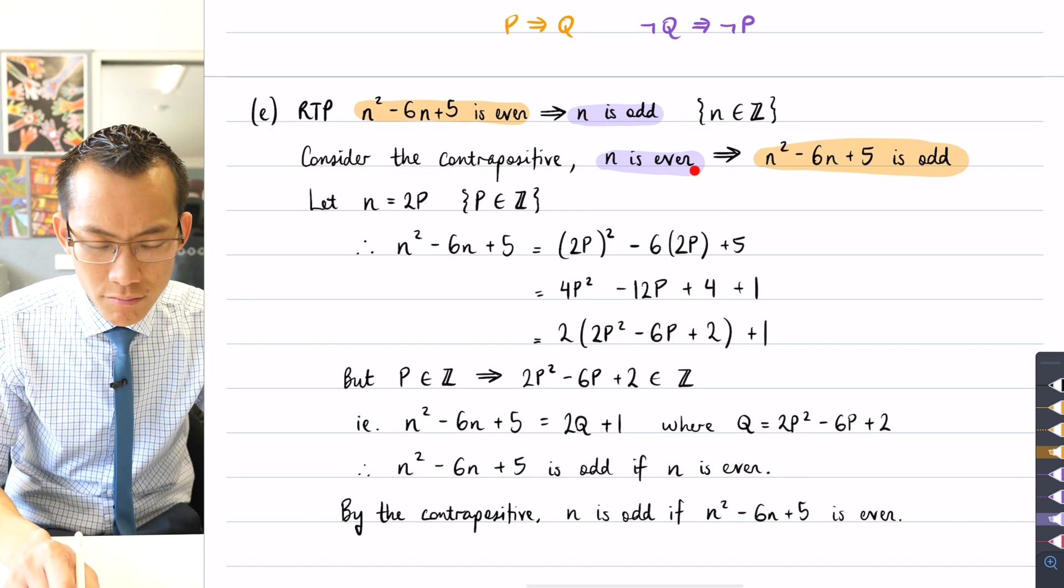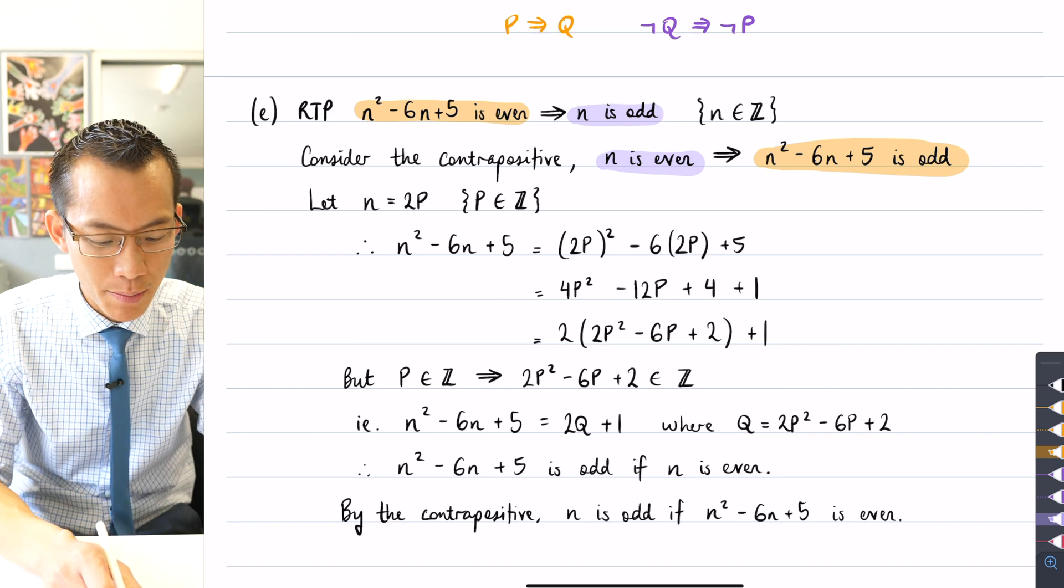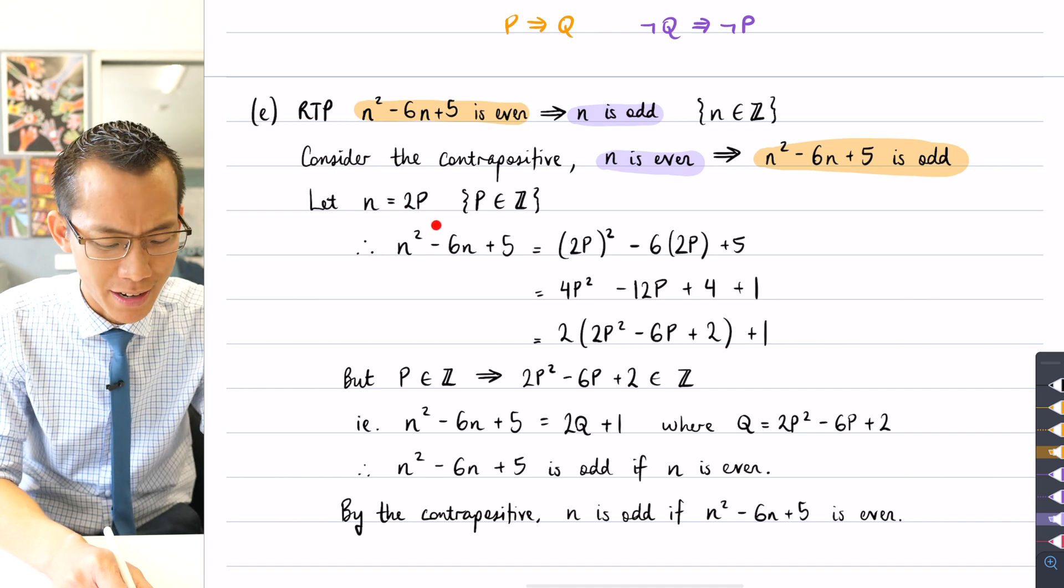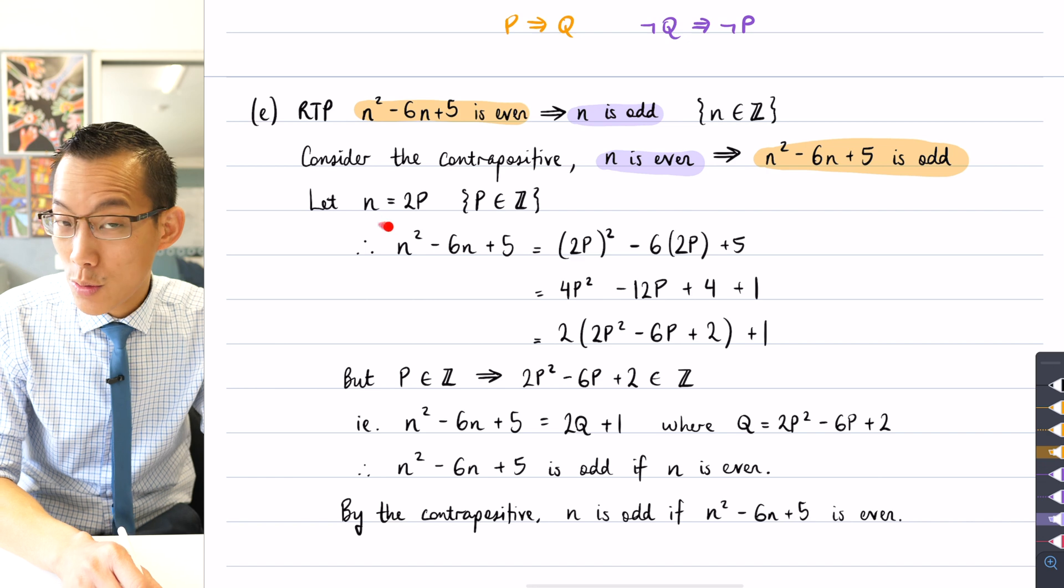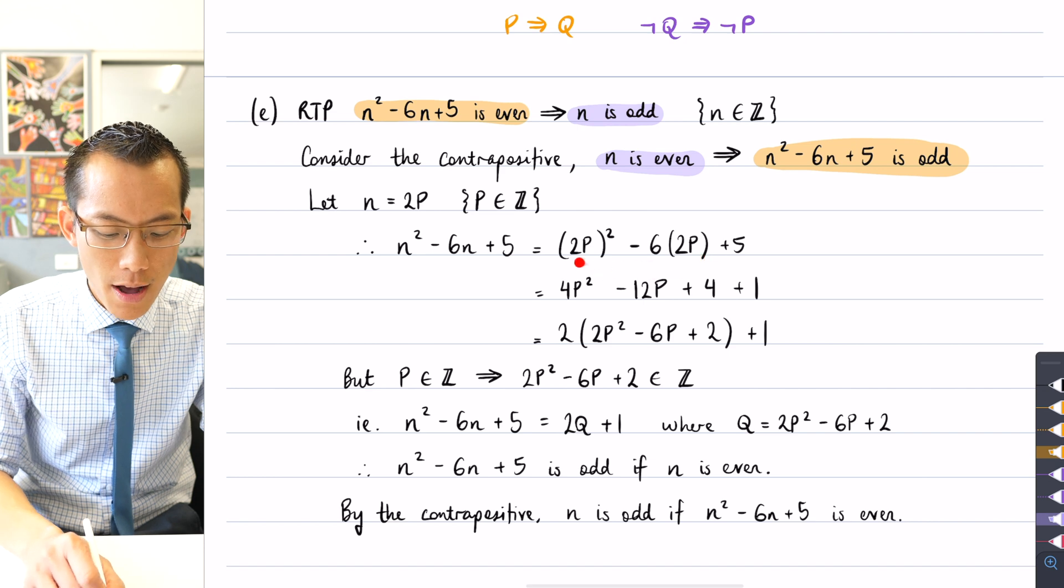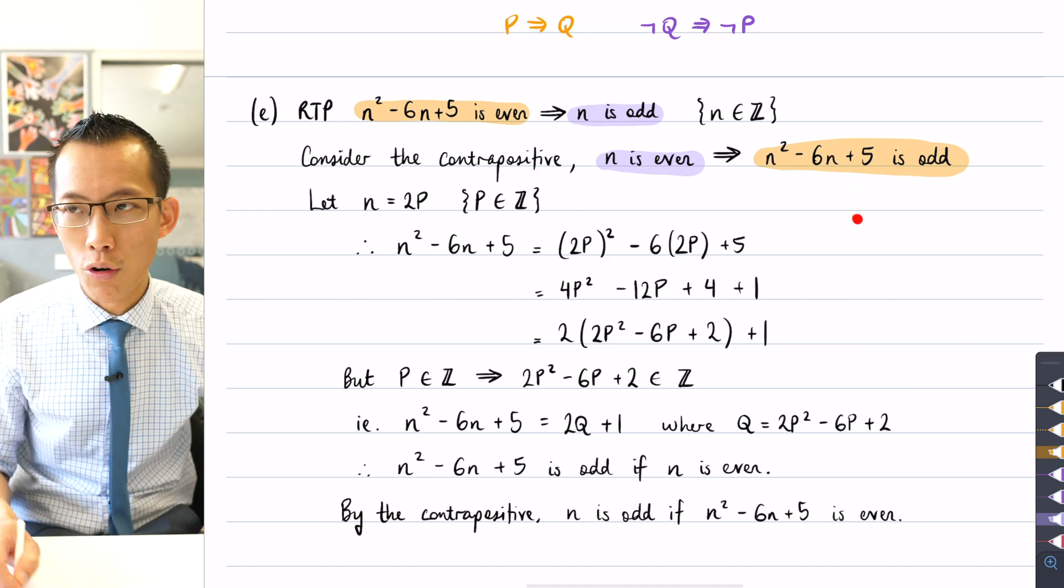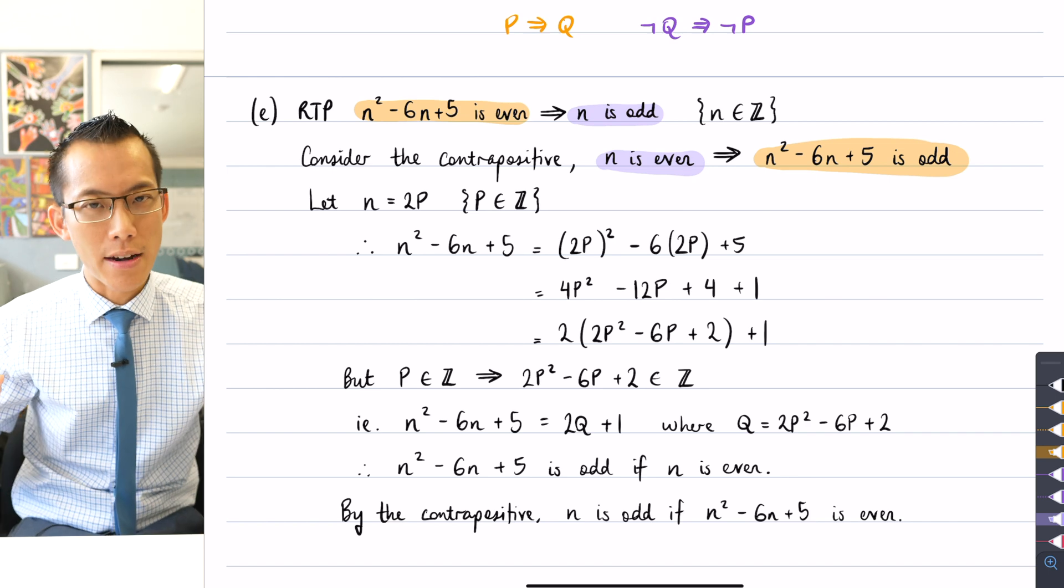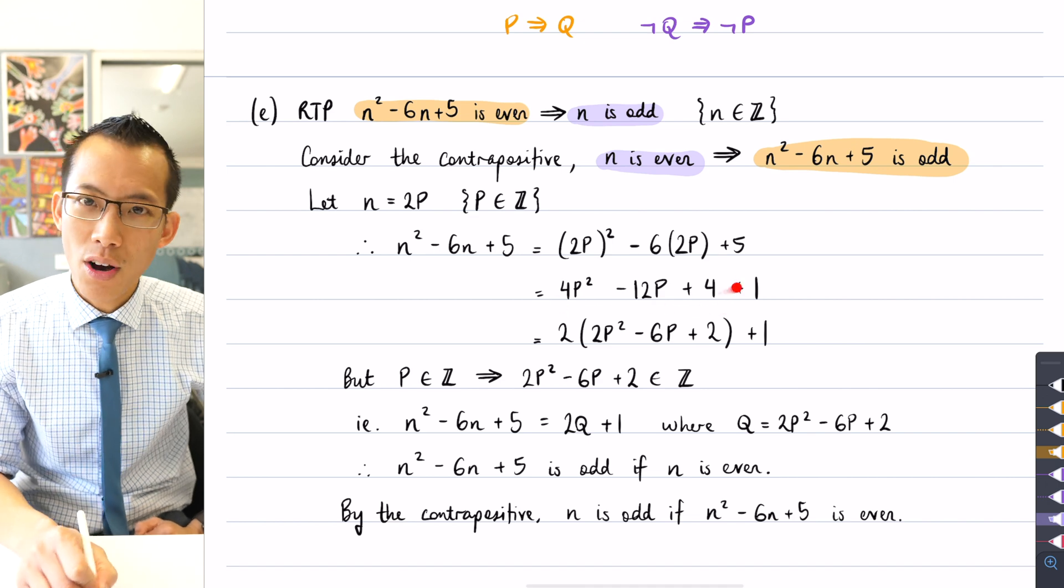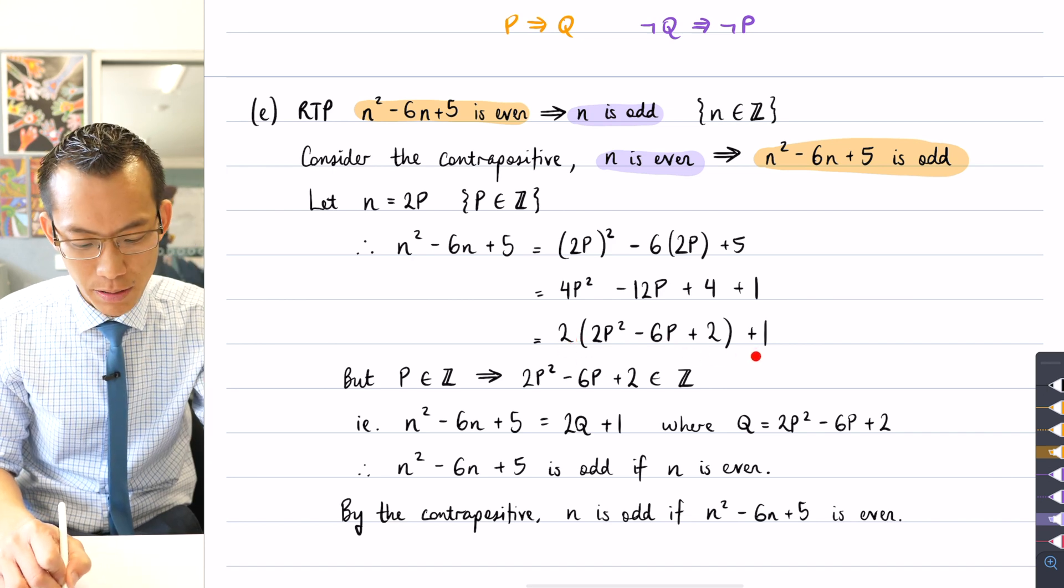So if n is even, what does that mean? Well, I state n equals 2p—that's a nice generic way to talk about any even kind of numbers. Don't forget to specify that p itself has to be an integer, otherwise you could have 2 times a half and that's not an even number. And then I say, well, if n equals 2p, what does that tell me about n² - 6n + 5? So I do my substitution in here, and what I'm trying to show is that n² - 6n + 5 is odd. An odd number is of the form an even number plus 1 or an even number minus 1. So if I can get it into that arrangement, I'm good to go. So I do my substitution, I expand out, and I notice I've got all these even terms here. If I factorize out the 2, it becomes very obvious. So I've done that, and then it's plus 1.